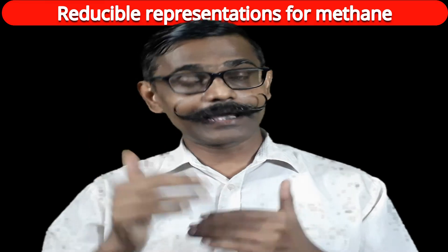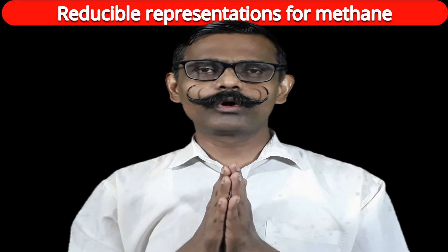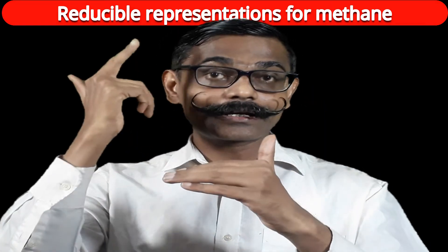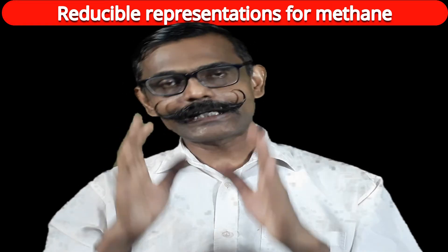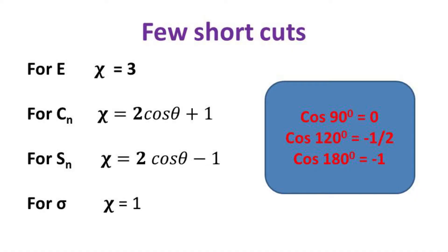All four methods will be discussed in detail with examples. For the 3n coordinate system, an easy shortcut exists: find which atoms have not changed position, then multiply by the character of the three-dimensional matrix to get the new character. Key tricks: the character for identity in three dimensions is 3; for rotation by angle θ it is 2cosθ + 1; for roto-reflection by angle θ it is 2cosθ − 1; and for any plane (vertical, diagonal, or horizontal) the character is 1.